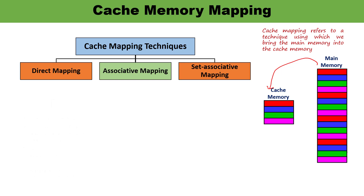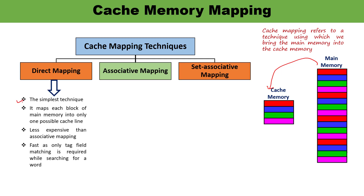The first is direct mapping — this is the simplest technique. Each block of main memory can be copied to only one possible cache line. This block can only go to one specific cache line; it cannot be copied to the second or third cache line. This is less expensive in comparison to associative mapping, and the process of searching for a word is very fast because there is only a requirement to find the tag field matching. I will talk in detail about each mapping technique in upcoming videos.